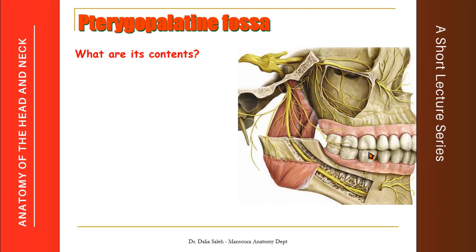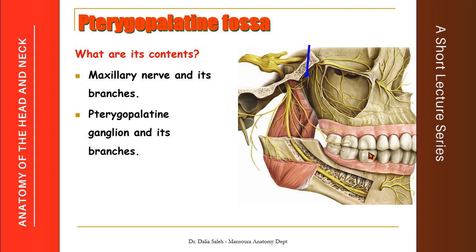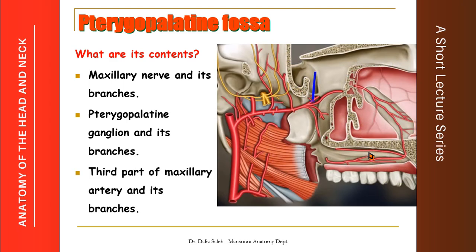What are the contents of the pterygopalatine fossa and why is it important to study? Because it contains the maxillary nerve, or the second division of the trigeminal nerve, and its branches. It also contains the largest autonomic ganglia of the head and neck, which is called the pterygopalatine or sphenopalatine ganglia, and also its branches. And it contains the third part of the maxillary artery and its branches.